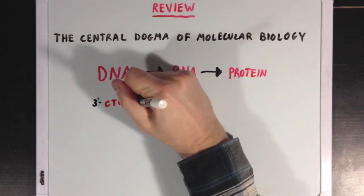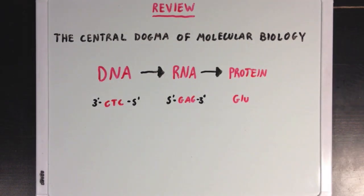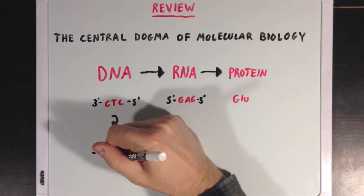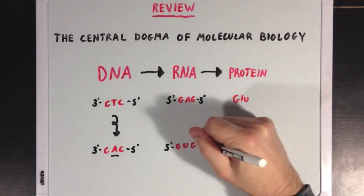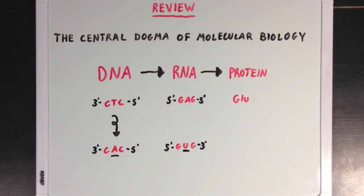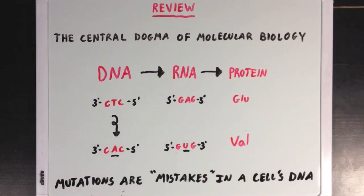Nucleotides from DNA are transcribed to their complementary forms on RNA, which are then read as codons, or groups of three, to code for specific amino acids in a larger protein. If you mutate one of the nucleotides on DNA — like turn a thymine base into an adenine base — that will affect the RNA sequence and ultimately the protein that follows. So, mutations are mistakes in a cell's DNA that ultimately lead to abnormal protein production.